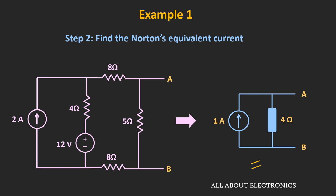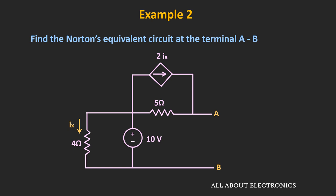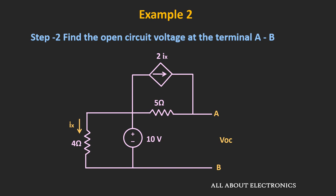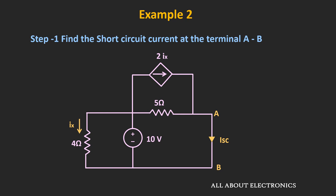Now let's take the second example where the circuit contains both independent and dependent sources. As mentioned, when the circuit contains both types of sources, we first find the short-circuit current between the two terminals, then find the open-circuit voltage. The ratio of the open-circuit voltage to the short-circuit current gives us the equivalent resistance. So first, let's find the Norton's equivalent current or the short-circuit current.